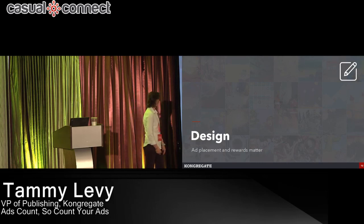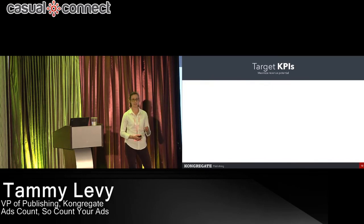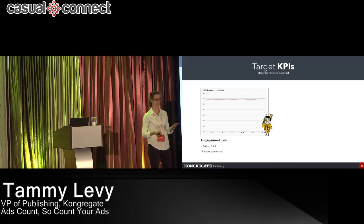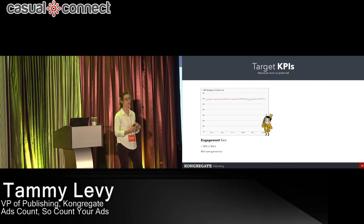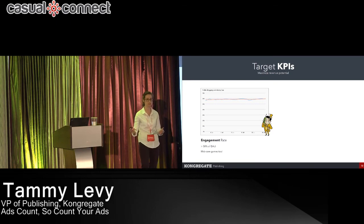Next is design — maximizing the number of impressions in your game. There are two KPIs to track. First, the percentage of your daily active users engaging with ads. We see a good target is over 50%. Adventure Capitalist was the first game to really nail this, starting at 40%. Through experimenting and testing new placements, we've been able to get to almost 60% across most of our portfolio.